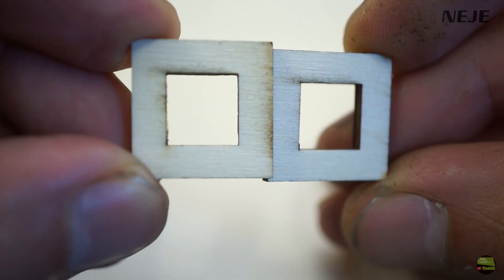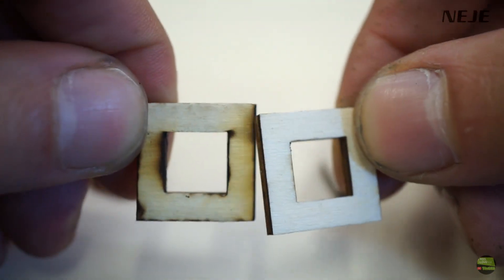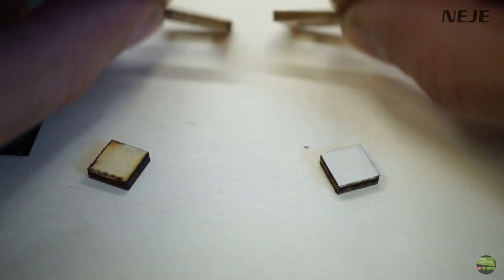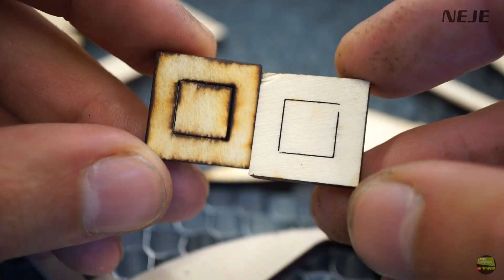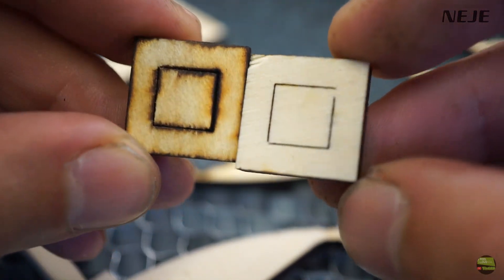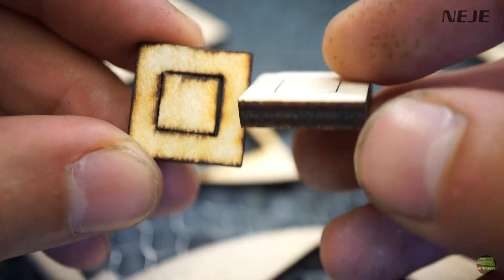On 3mm plywood the result is quite the same, no burning caught on the bottom side. And also on 5mm plywood where there's much more dust, we got a clean cut. Actually the bottom side is even more clear than the top, but the top side mostly depends on air assist settings.